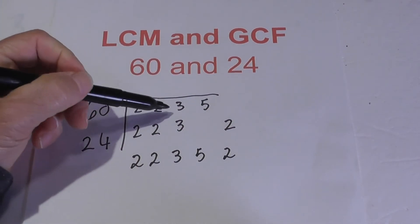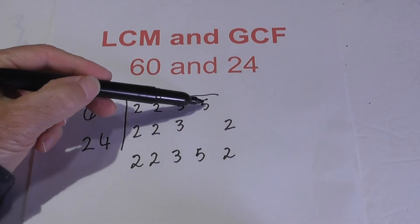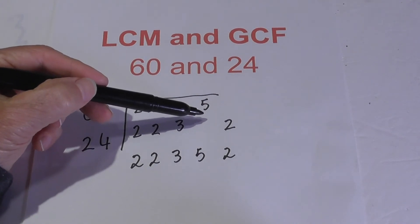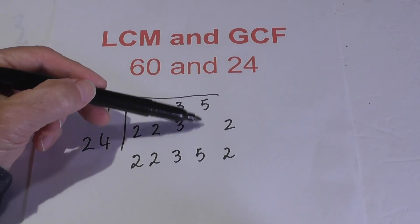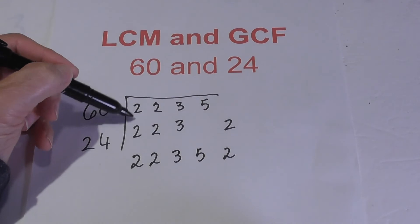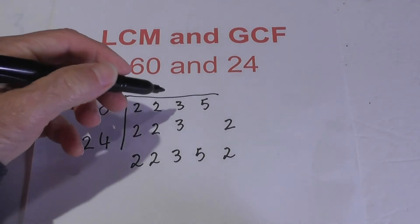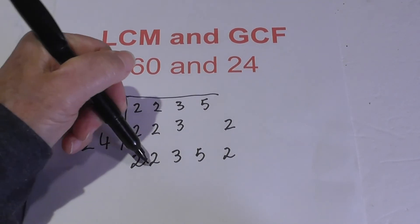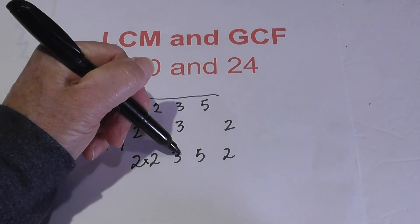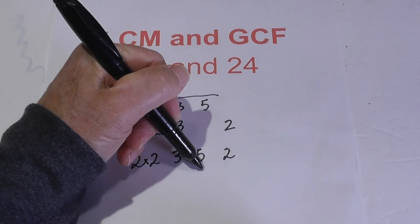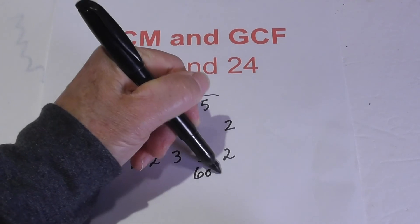Remember, with the GCF we didn't bring down the 5 because you had to have a pair. But in the LCM you still bring it down—it's just when you have 2 you only bring one number down. Now multiply these together: 2 times 2 is 4, then that's 12, 12 times 5 is 60, and then 60 times 2 equals 120.